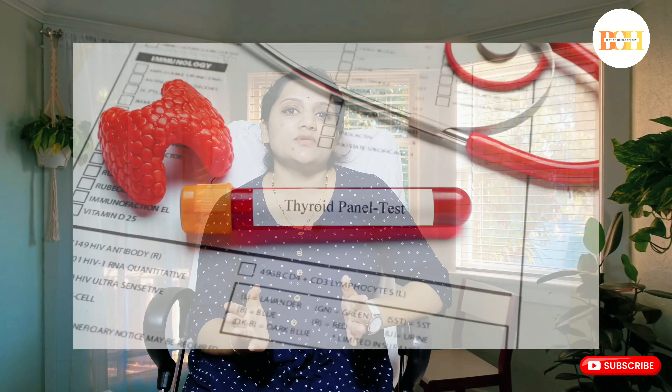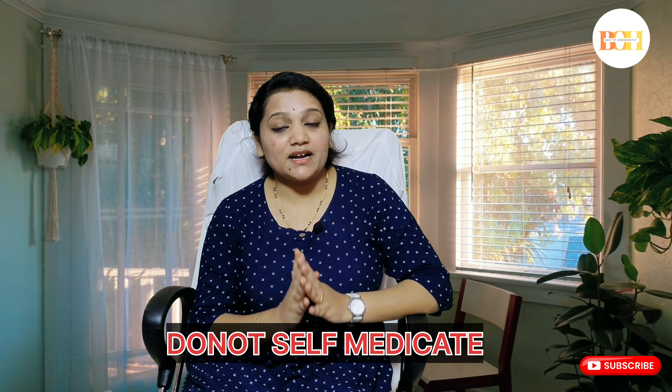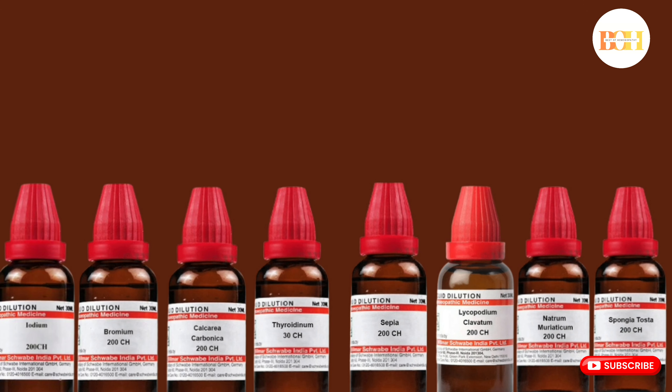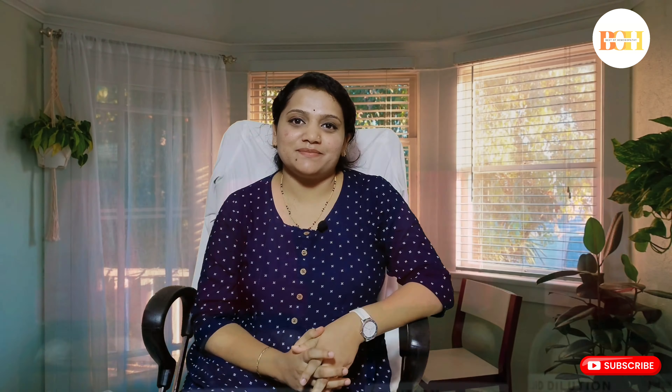Do consult a qualified homeopathic physician and do not self-medicate under any circumstance in cases of hypothyroidism. Some of the homeopathic medicines which will help in bringing your thyroid function to normal include iodine, bromine, calcarea carb, thyroidinum, sepia, lycopodium, natrium, and spongia.